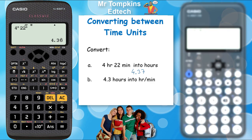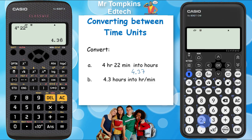On the new calculator, the process is similar. I'm going to press 4 first. But you can see the time key — you need to access it via the shift button on this one. It's on the plus key. So I'm going to press shift and then the plus key, which is going to give me that little circle next to the 4.